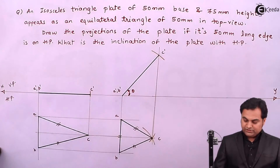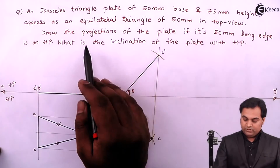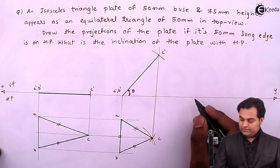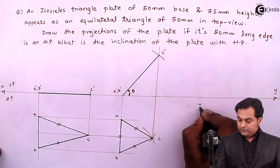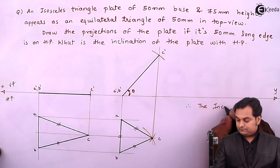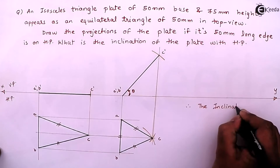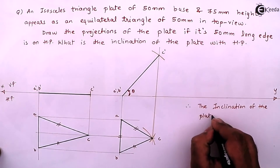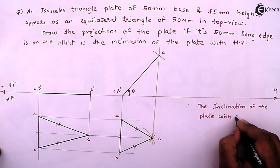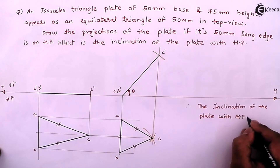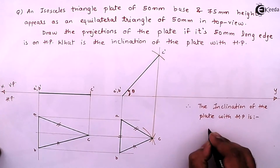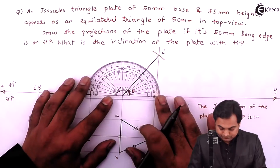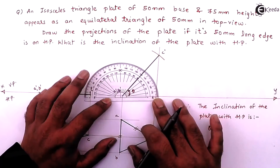In this question it was also asked: what is the inclination of the plate with HP? Therefore, the inclination of the plate with HP is theta, which equals 50 degrees.